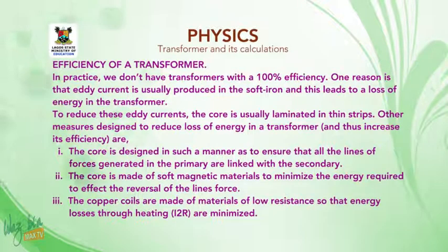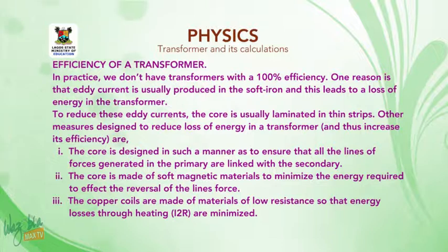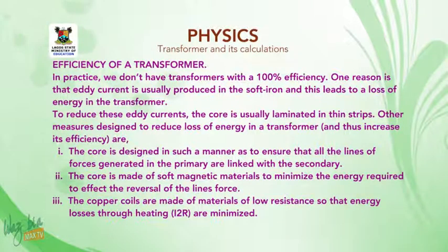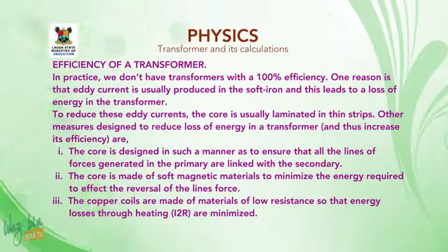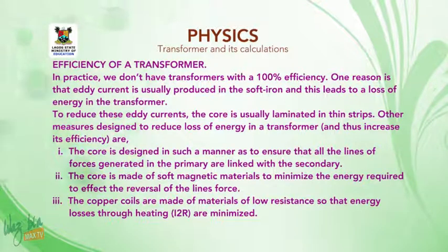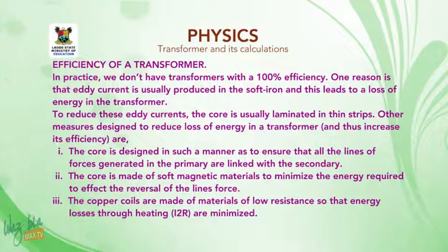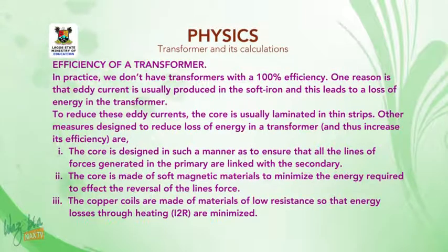Efficiency of a transformer. In practice, we do not have transformers with 100% efficiency. One reason is that eddy currents are usually produced in the soft iron core and this leads to a loss of energy in the transformer. To reduce eddy currents, the core is usually laminated in thin strips. Other measures to reduce loss of energy and thus increase efficiency are: one, the core is designed to ensure all lines of force generated in the primary are linked with the secondary; two, the core is made of soft magnetic material to minimize energy required to reverse the lines of force; three, the copper coils are made of material of low resistance so that energy losses through heating are minimized.